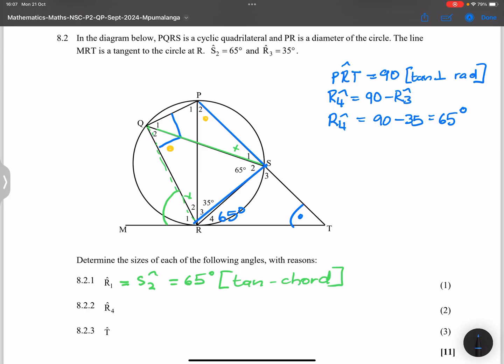So we said we've got a 90 degree angle that is formed there. So in that case, it would make it easy for us to find the angle P2. Because that means that angle P2, and by the way, we could have also gotten it through the tan chord theorem. So P2 is actually also equal to 65 degrees.